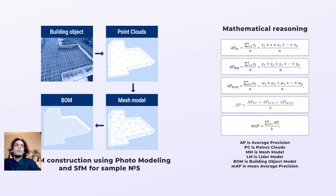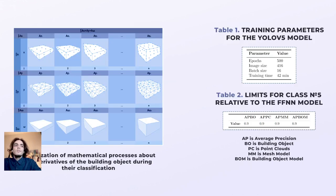The value of the average precision of the point clouds, mesh models, BOMs, general average precision, and mean average precision are determined by equations in the figure. The next figure shows visualization of the mathematical processes about the derivatives of the building object during their classification.